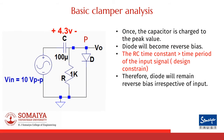The capacitor charges to a value equal to the peak value of the input signal minus the diode drop. Once the capacitor is charged to its peak value, the diode will become reverse biased. The clamper circuit is designed such that the RC time constant of the circuit will always be greater than the time period of the input signal. So the capacitor will never get discharged and the diode will never become forward biased again.